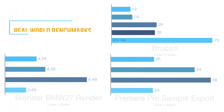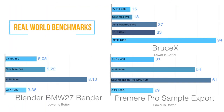Now looking at real-world benchmarks with applications, you can see how in applications like Blender that have CUDA support, it is a significant improvement over the 480. But if you look at Bruce X for Final Cut Pro, which is OpenCL optimized, it gets crushed.